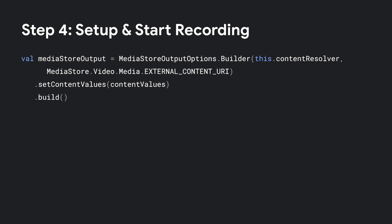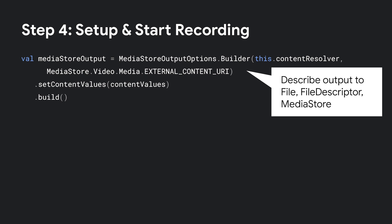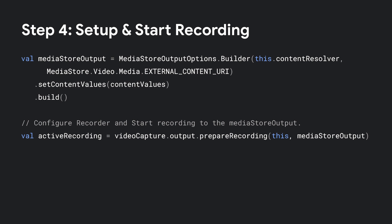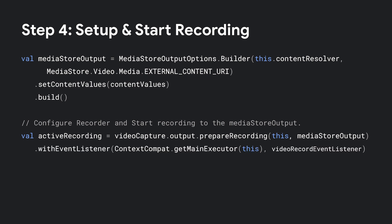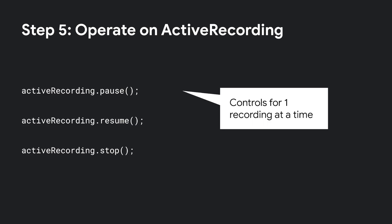Next, we'll specify the output and start the recording. Video capture can output to a file, file descriptor, or media store. Here, we output to a media store. To start the recording, we first prepare the recording using our new media store output, then associate the event listener we created. We then choose to enable audio — the app should have already obtained audio permissions. Finally, we call start to start the recording. This gives us a handle to the active recording. With active recording, we can pause, resume, or stop the recording. This lets us operate on one recording at a time.